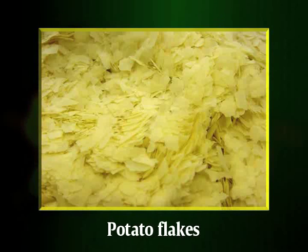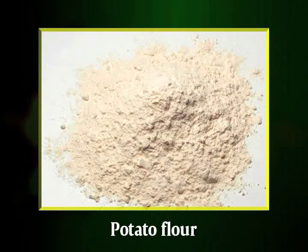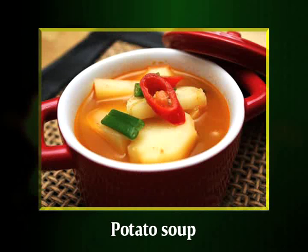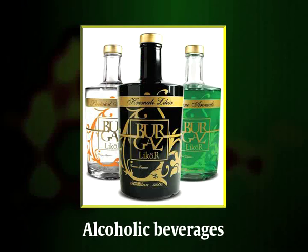Dehydrated potato flakes and granules are made by drying a mash of cooked potatoes to a moisture level of 5 to 8 percent. Flakes are used in retail mashed potato products, as ingredients in snacks and even as food aid. Potato flour, ground from cooked whole potatoes, retains a distinct potato taste and is used by the food industry to bind meat mixtures and thicken gravies and soups. In eastern Europe and Scandinavia, crushed potatoes are heated to convert their starch to fermentable sugars, which are used in the distillation of alcoholic beverages such as vodka.